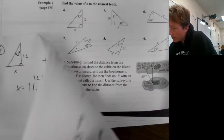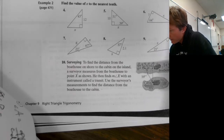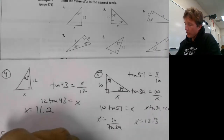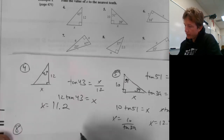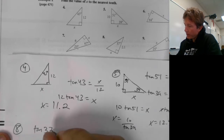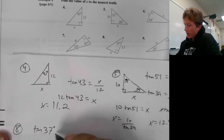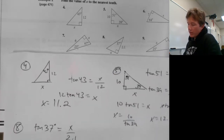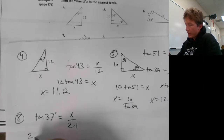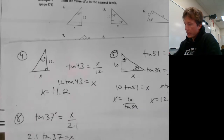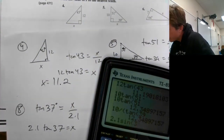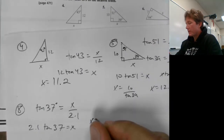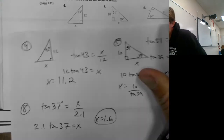I'll let you do numbers 6 and 7. Let's do number 8 together, because there's a decimal in there. I have my angle — 37 degrees — and I'm going to do opposite over adjacent. So to solve for X, I multiply by 2.1. I get 2.1 times tangent of 37 equals X. So X equals 1.6.